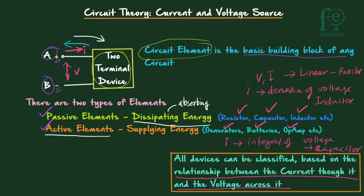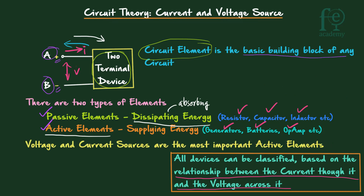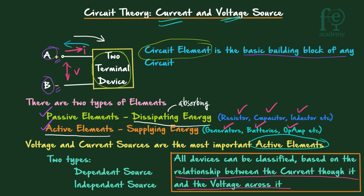Based on the behavior of the device with respect to the current through it and the voltage across it, we can categorize it into different categories. Voltage and current sources are the most important active elements. These are further categorized into two types: one is dependent source and another one is independent source.